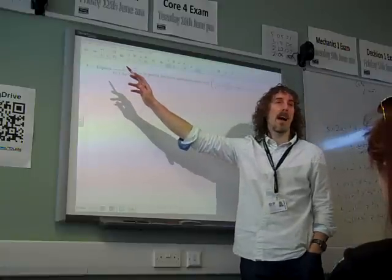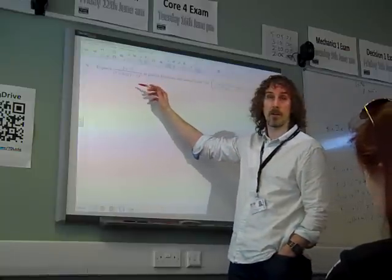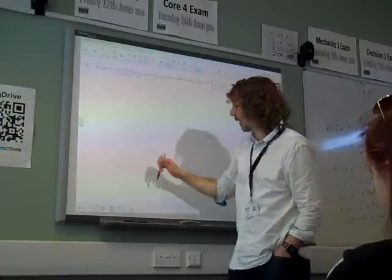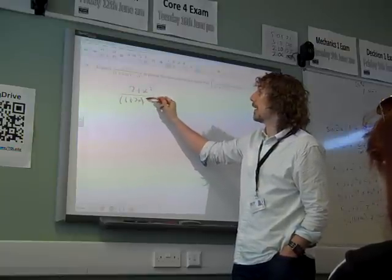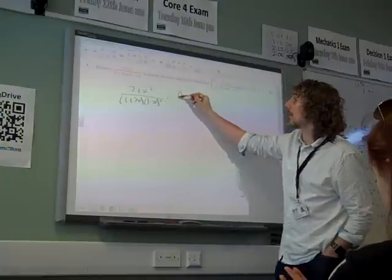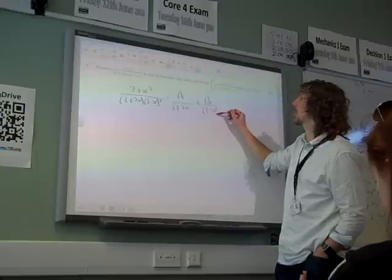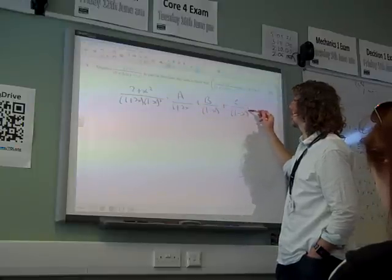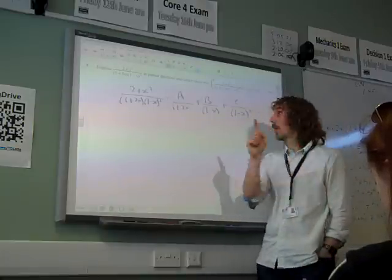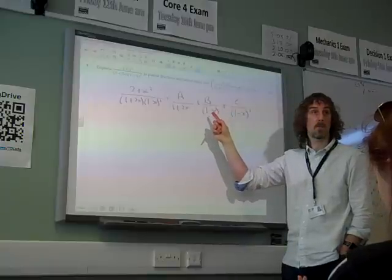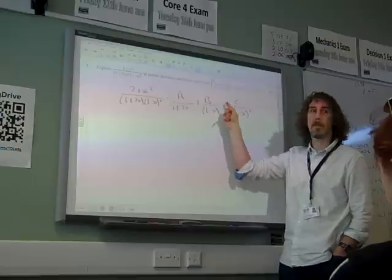Right, so first thing, it's a bit unusual for them not to give you the form, but we know this. This in partial fractions has got to be, you need that repeated root twice, don't we? So we need to have a over 1 plus 2x plus b over 1 minus x plus c over 1 minus x squared. And it's possible that b could be 0. a and c can't be 0, but b could be 0, because that might be a redundant term.